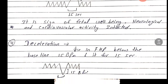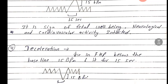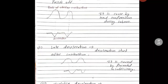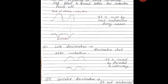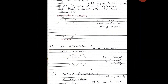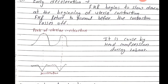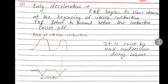Fourth is deceleration — a decrease in fetal heart rate below the baseline by 15 beats per minute for at least 15 seconds. There are three types of deceleration: first, early deceleration; second, late deceleration; and third, variable deceleration.